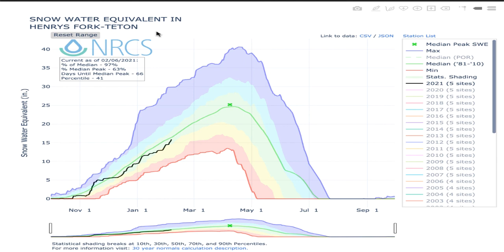I'm going to take you through what we're looking at in this plot, because there's a lot going on — it's a busy plot, but once you know what you're looking at it becomes easier to navigate. What's being plotted on the y-axis is snow water equivalent in units of inches — basically the equivalent depth of snow water if distributed evenly over the entire Henry's Fork river basin.